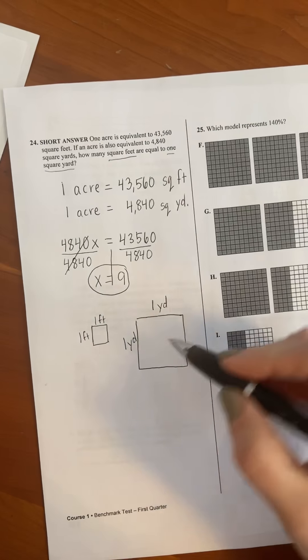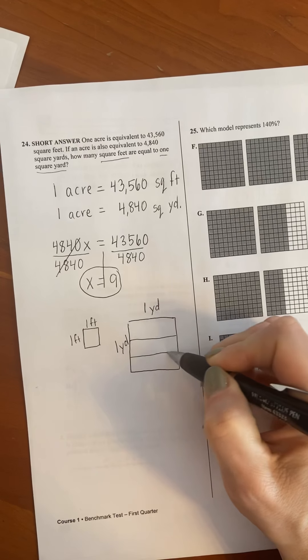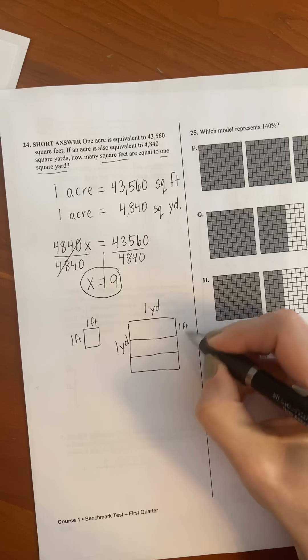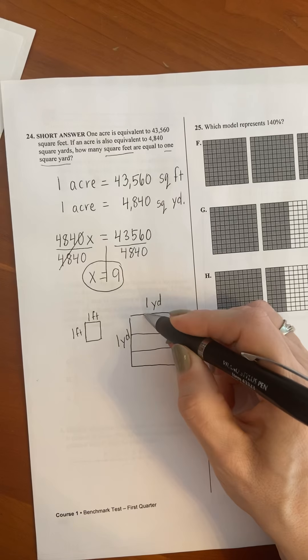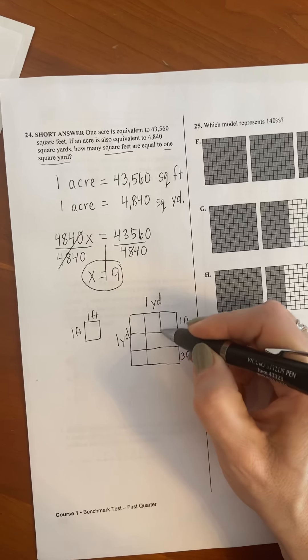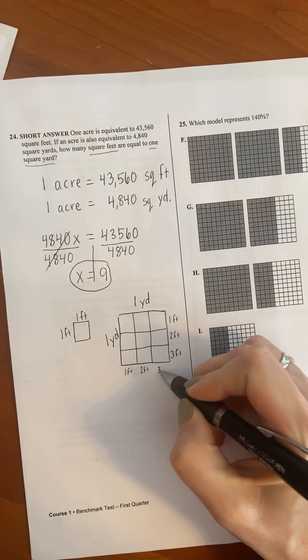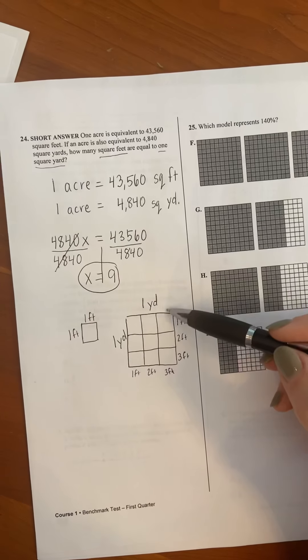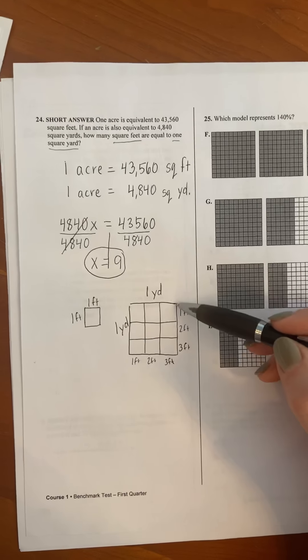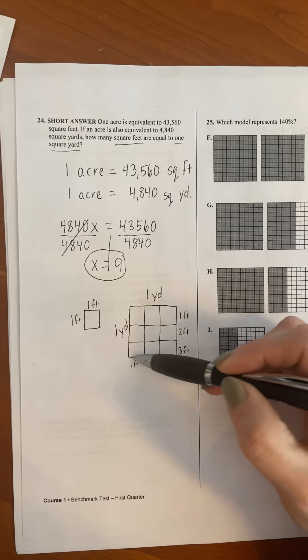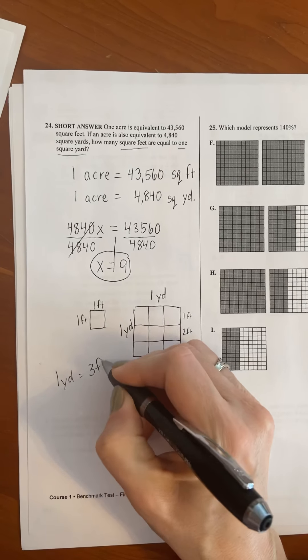And so you have one square yard. If you know that a yard has three feet in it you can break this up. So this would be one foot, two feet, three feet, and then you do the same going the other way. So this would be one foot, two feet, three feet. And so now this is one yard by one yard. It's one square yard but it's also three feet by three feet. They're equal because one yard equals three feet.